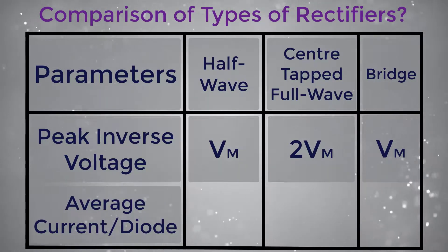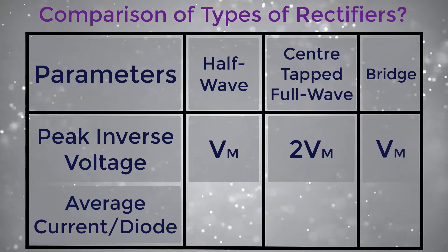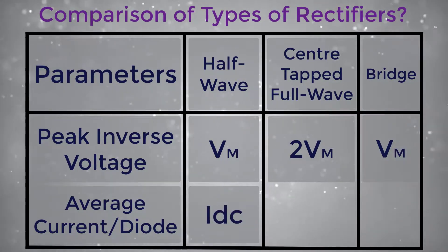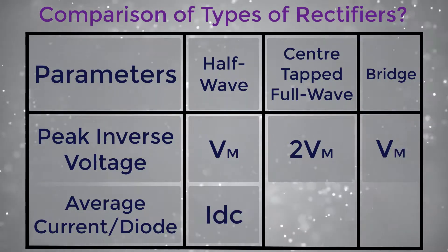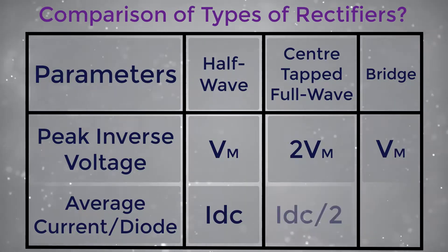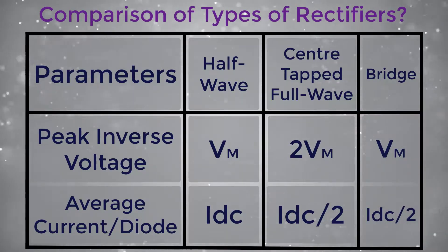Average current per diode: for half wave it is Idc, whereas for center tapped full wave and bridge it is Idc divided by 2.